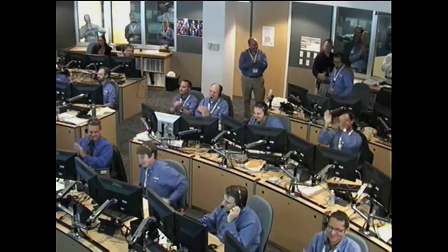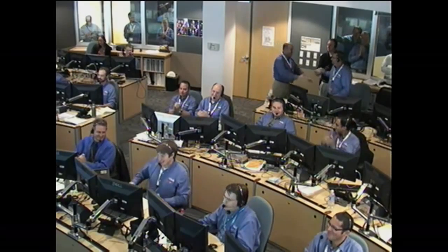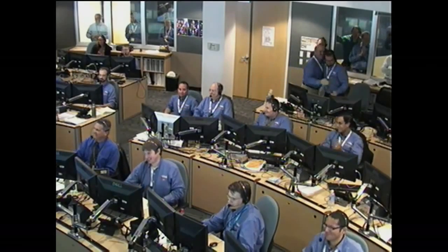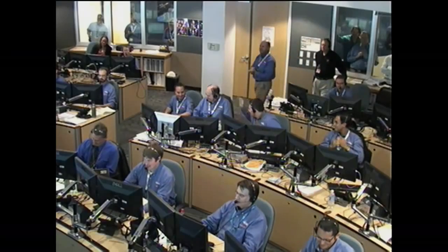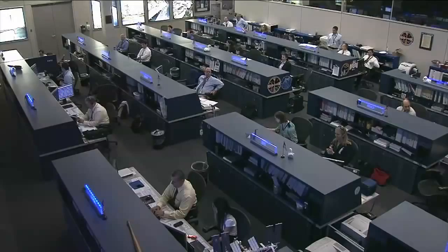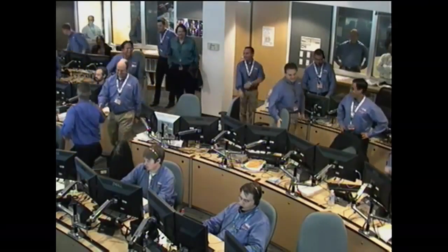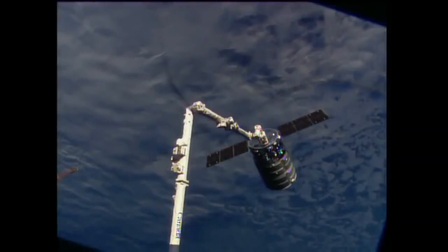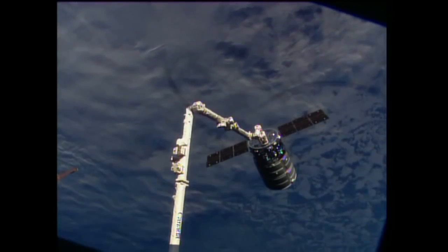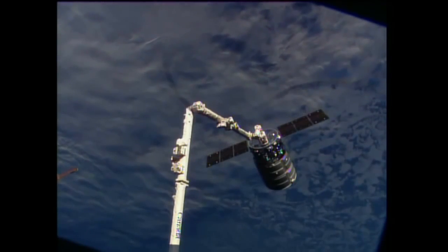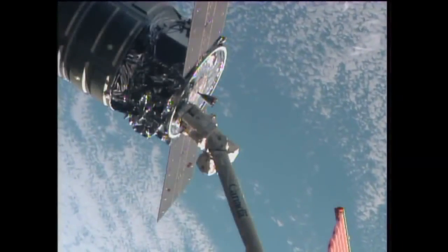Smiles and clapping - a good capture down here. That's a long time coming. Looks great. A happy team there at the Mission Control Center just outside of Dulles, Virginia. And there is our first view of Cygnus now captured on the end of the station's arm. Quite a success for this team.